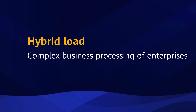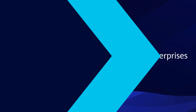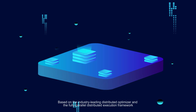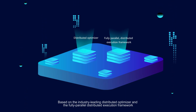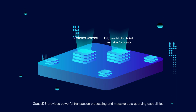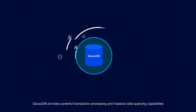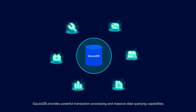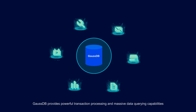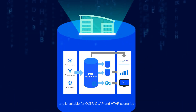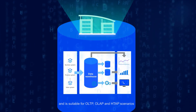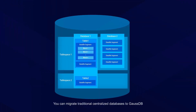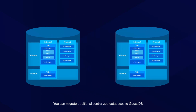Hybrid load — complex business processing for enterprises. Based on the industry-leading distributed optimizer and the fully parallel distributed execution framework, GaussDB provides powerful transaction processing and massive data querying capabilities, and is suitable for OLTP, OLAP, and HTAP scenarios. You can migrate traditional centralized databases to GaussDB.